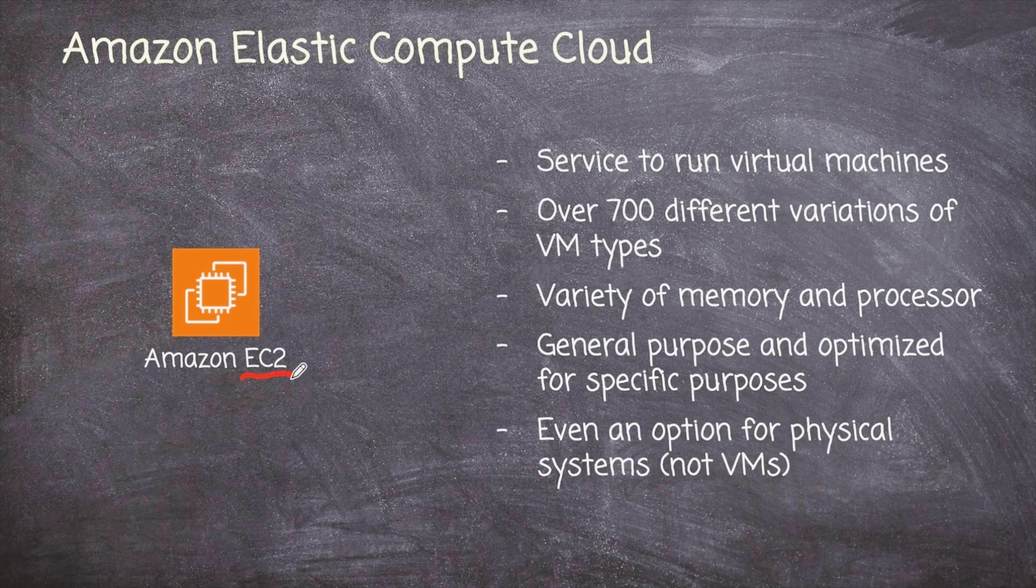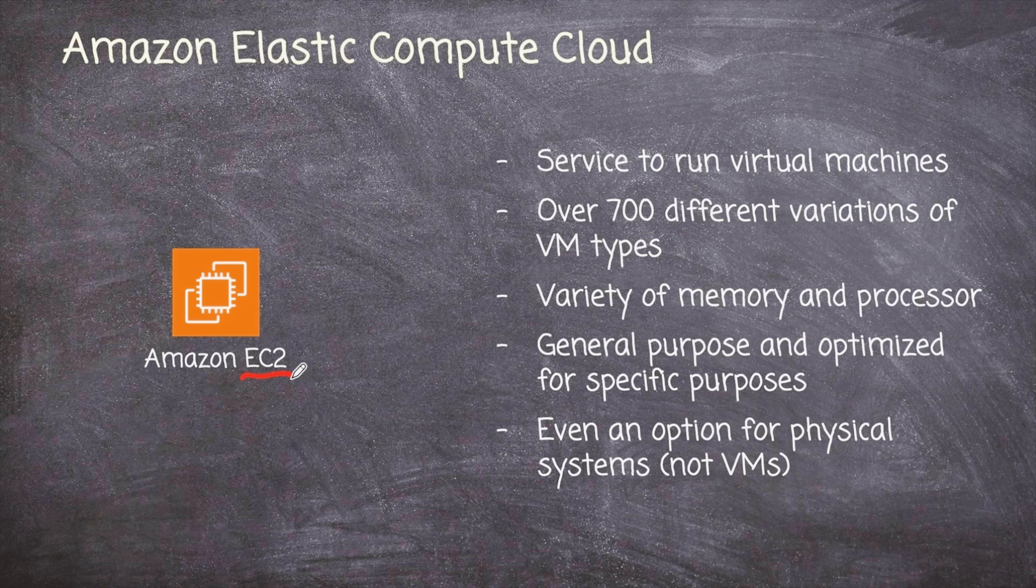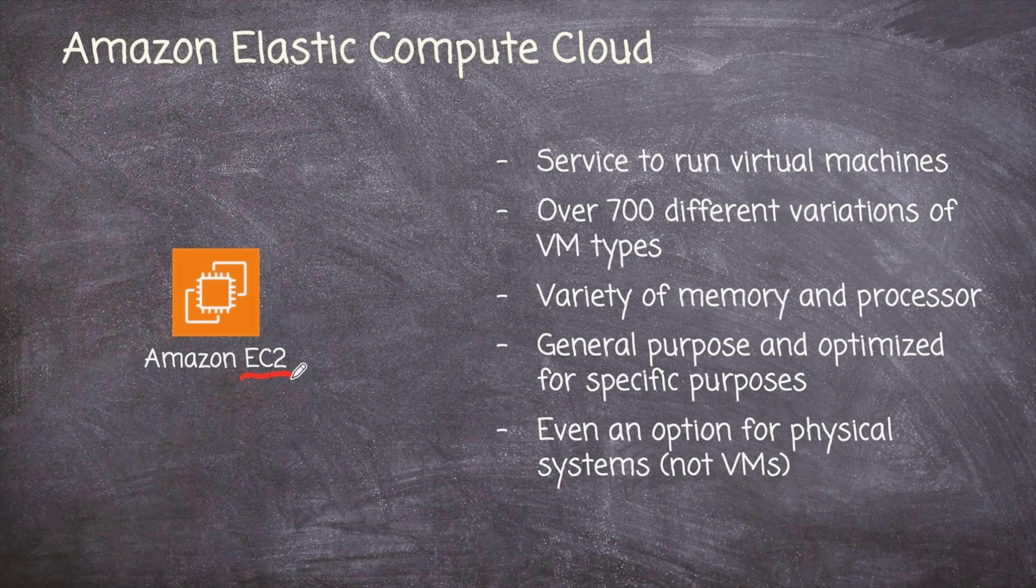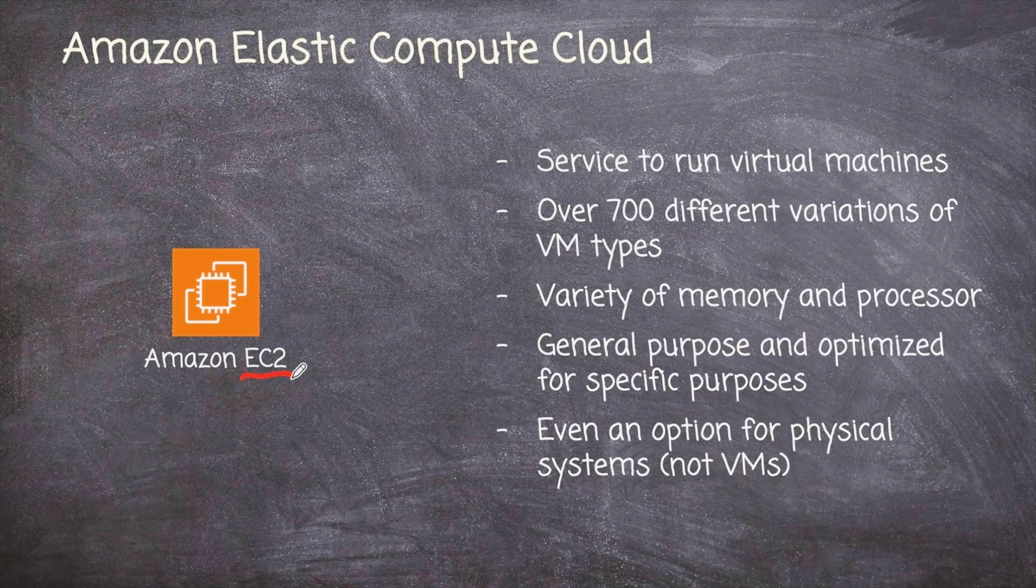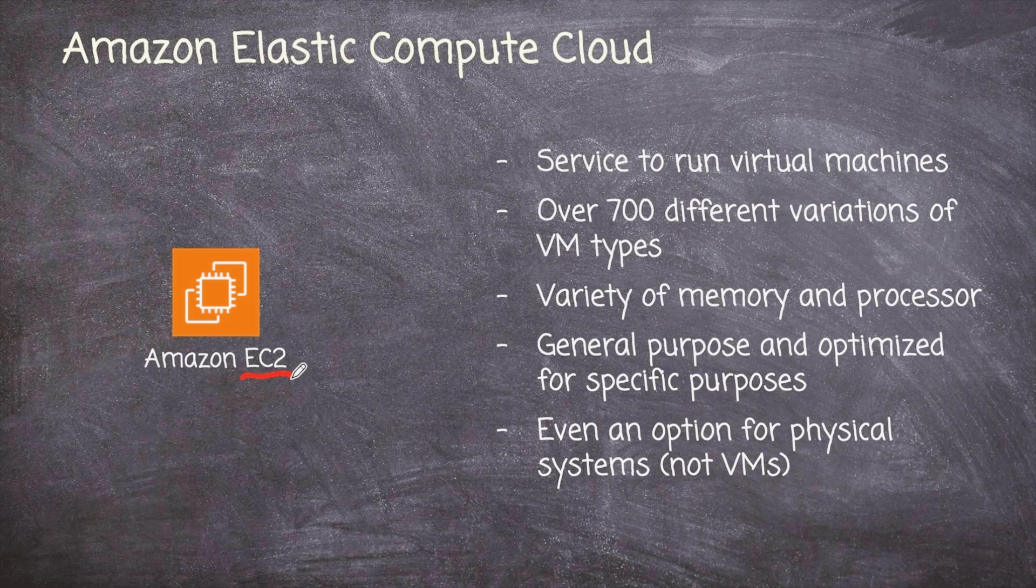And we even have an option if we look at all these virtual machine types and say, nah, I still want a physical machine. We can even provision a physical machine. In other words, we can go out to the AWS console. We can provision or select a physical system. And that physical system is going to be in some server rack in an AWS data center. And it's going to be all ours to do whatever we want to do with it.